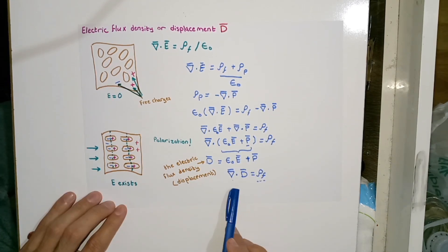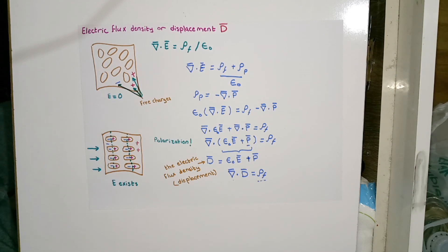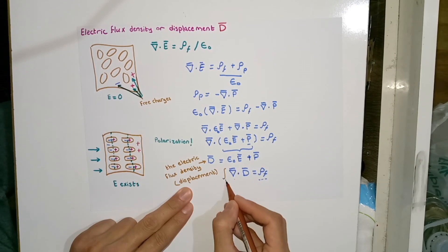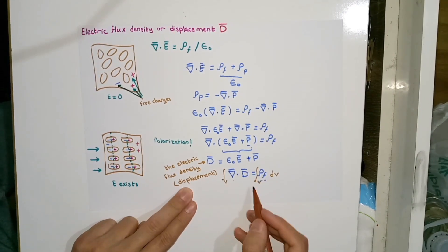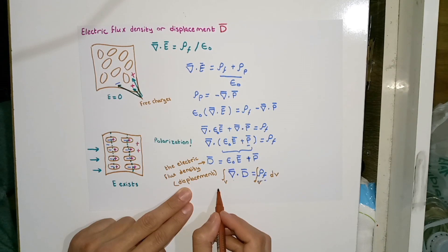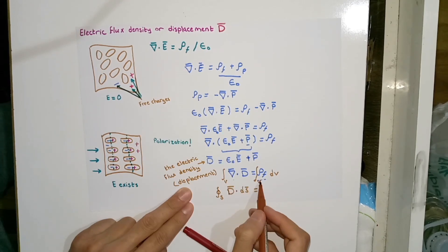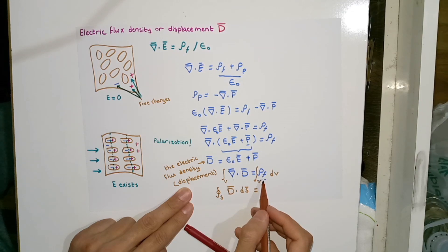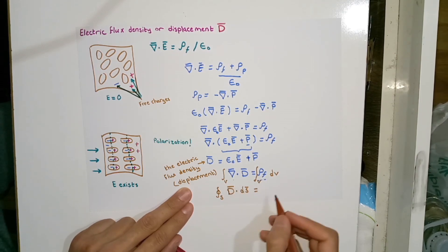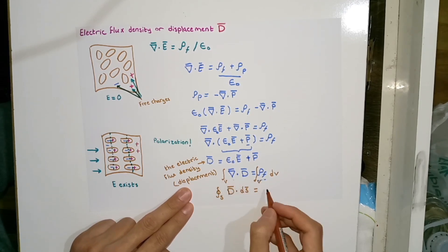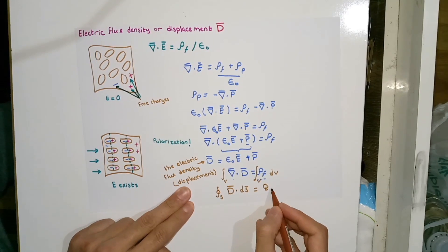From this equation I am going to derive Gauss's law by taking the volume integration of both sides. The volume integration of the divergence equals the surface integral of the displacement vector D, and the volume integral of the free volume charge density equals the total free charges enclosed in the surface.